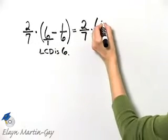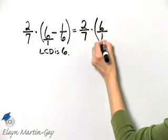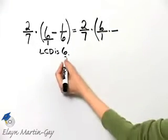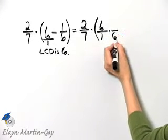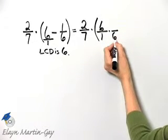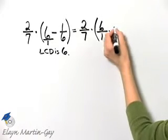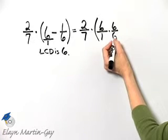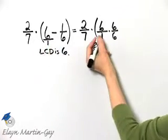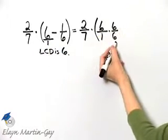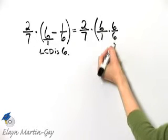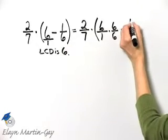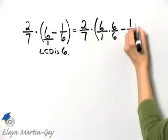So let's take this six over one, and what will we multiply by in order to have a denominator of six? Well, one times six is six, and whatever I multiply by there, remember I've got to multiply by the same number in the numerator. So I'm taking this number six and multiplying it by a form of one, which is six over six. And then minus — let me write down the second fraction — one over six.